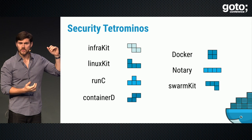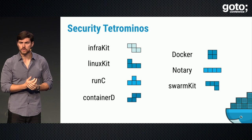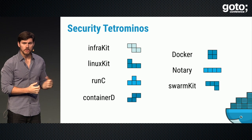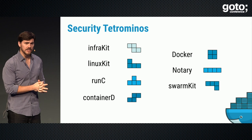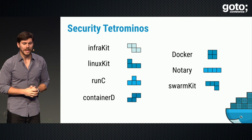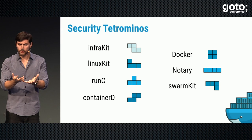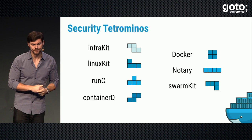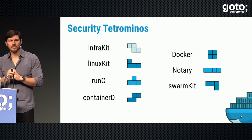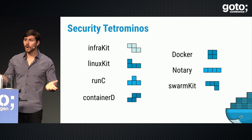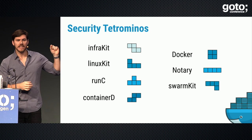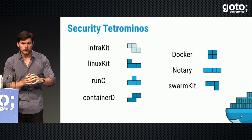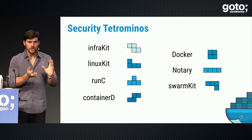The seven Tetrominoes are: InfraKit, which manages infrastructure in an infrastructure-independent way; LinuxKit, which allows you to build operating systems; RunC, a container runtime; Containerd, a container supervisor; Docker itself, a container execution platform; Notary, for signing; and SwarmKit, a container orchestrator. Each is open source, each has different security properties, and each can operate independently — you can compose them however you like.